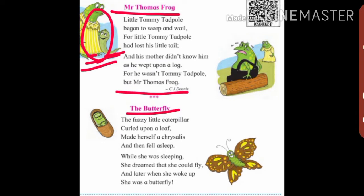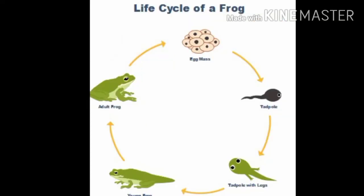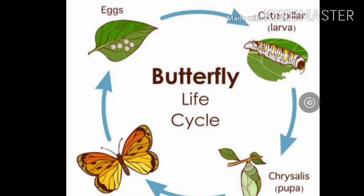In the first part, the poet discusses the growth of the frog — how it grows into a frog. All human beings grow from baby to old age. In the same way, there are different stages of growth for the frog and butterfly. All animals have many stages of growth.